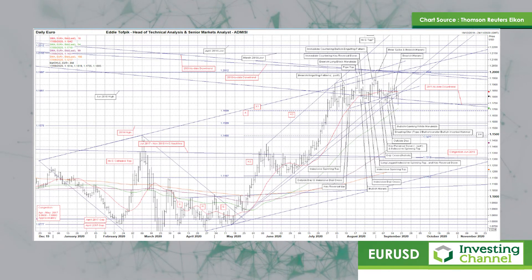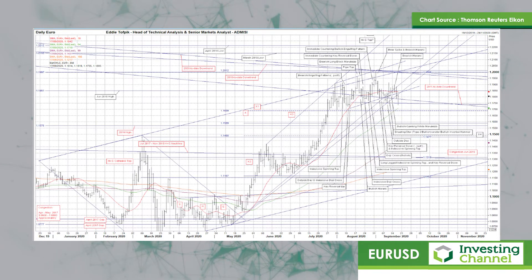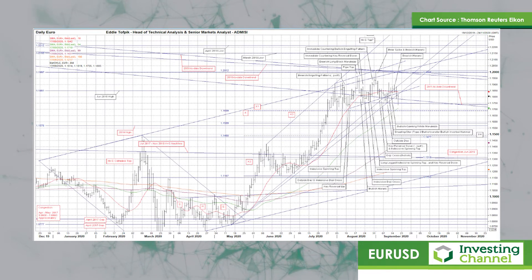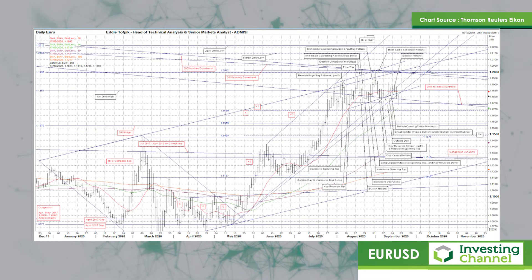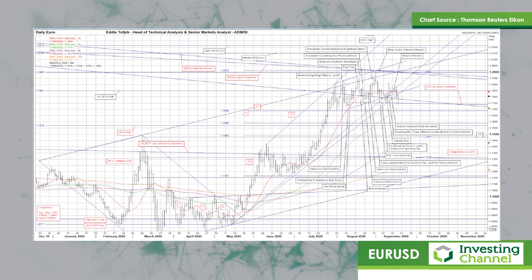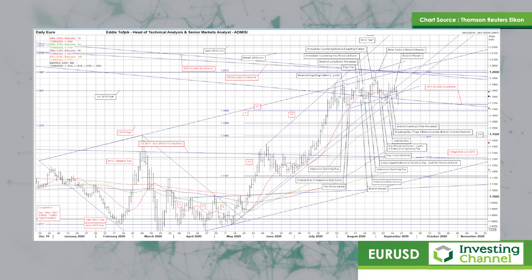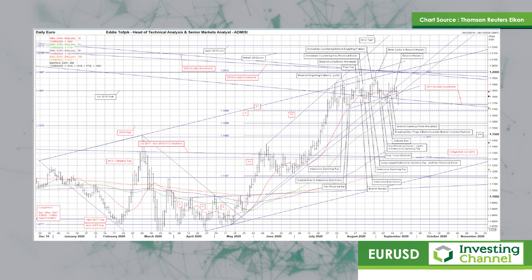And lastly, the true May 2020 to date uptrend, currently 118.21. It closed below all those bar the true uptrend and indeed only found support at the top of the broken but still influential 2011 to date downtrend, currently at 117.84.